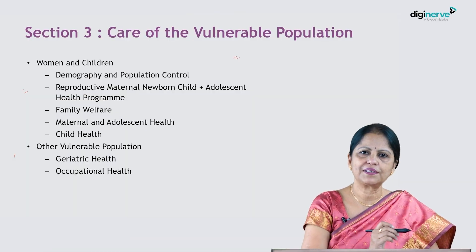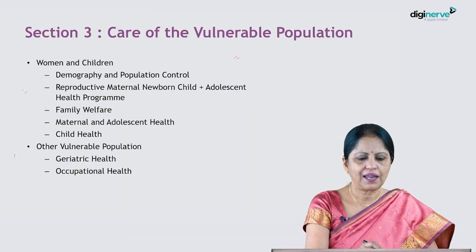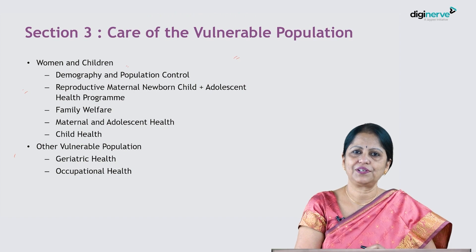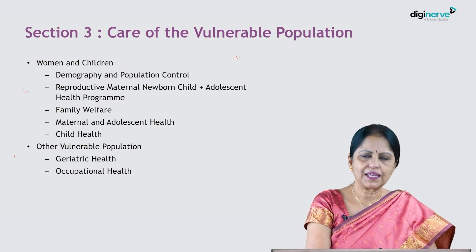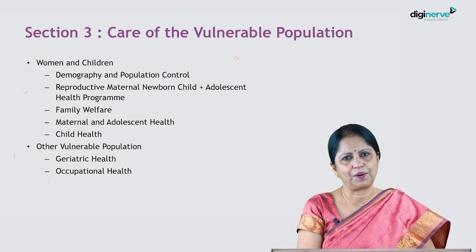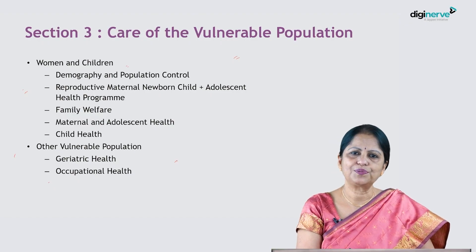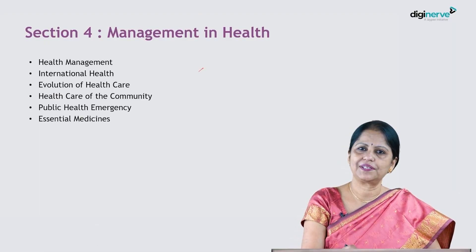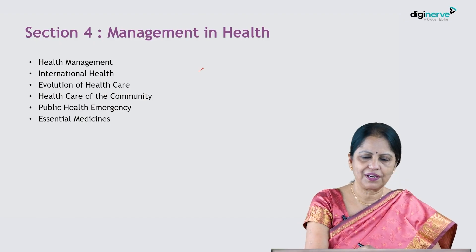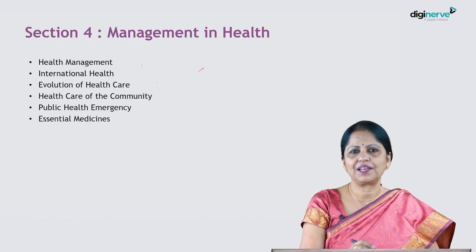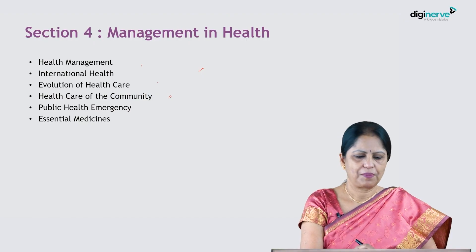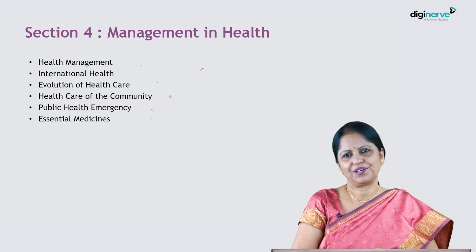Section 3 is on care of the vulnerable population, with two parts. The first part focuses on women and children, who comprise a very vulnerable section of the population. The second part covers other vulnerable populations, including the geriatric population and those exposed to occupational hazards. Section 4 is on management in health, including general health management, international health, the healthcare delivery system in the country, public health emergency, and essential medicines.